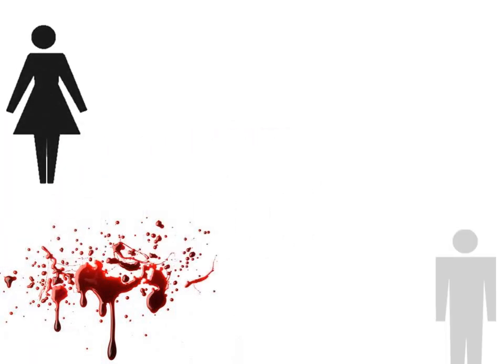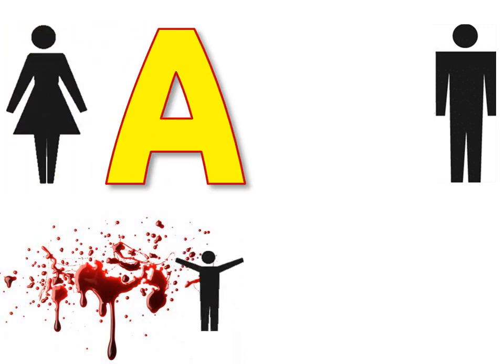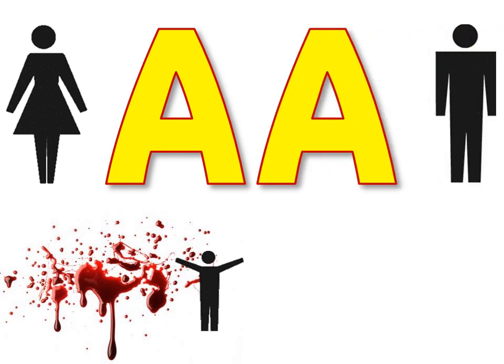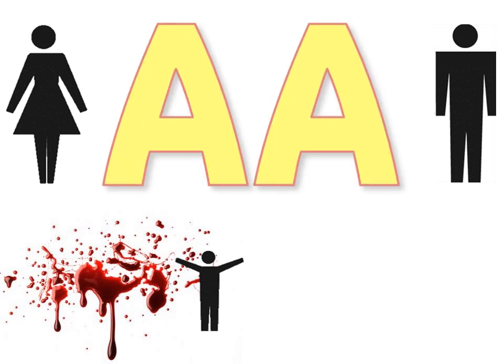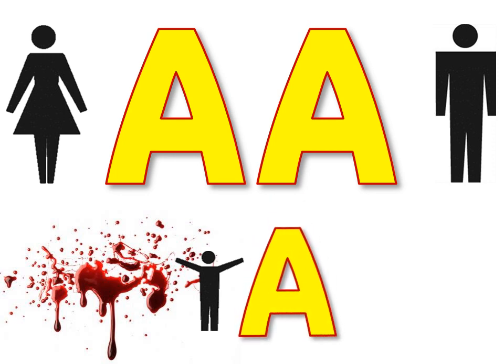The type of blood you have depends on the type of blood your parents had. Your parents can donate one gene for each of your traits. In this example, your mother donated an A, and so did your dad, so your genes for blood type were AA. In this case, you would have blood type A.